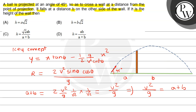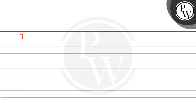चलो अब equation of trajectory पे जाते हैं. Equation of trajectory में θ = 45° है तो tan θ = 1. तो y is equal to x minus half of g divided by v², और cos²θ की value 1/2 आजाएगी, और ऊपर x² आएगा. तो 2 cancel हो जाएगा और g/v² की जगह हम लिख सकते हैं: y is equal to x minus x² divided by (A plus B).